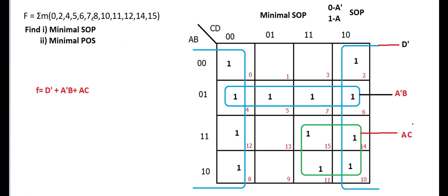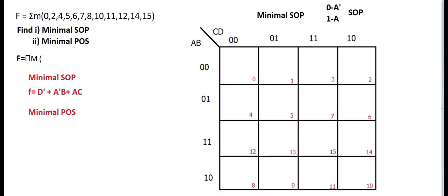Now POS is different. For minimal POS, when given minterms, the corresponding cells are filled with 1. The left-out cell values are 0. The left-out cells here are: 1, 3, 9, and 13. These cells are to be filled with 0 and are considered as maxterms for the POS grouping.